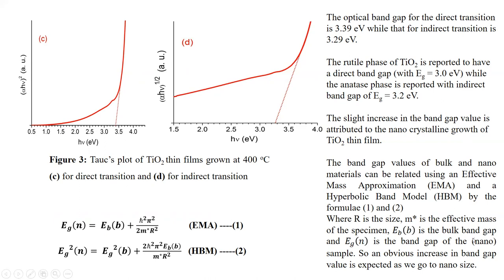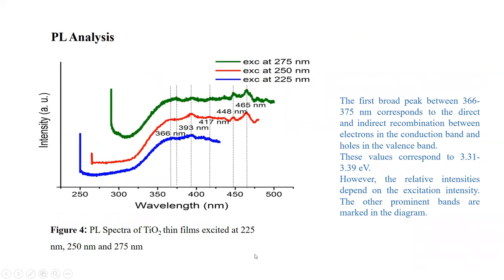Band gap values of bulk and nanomaterials can be related using the effective mass approximation and hyperbolic model by the formulae 1 and 2 given here. For photoluminescence analysis, the first broad peak between 366 to 367 nanometers corresponds to direct and indirect recombination between electrons in the conduction band and holes in the valence band, corresponding to 3.31 and 3.39 electron volts. The relative intensities depend on excitation intensity, and other prominent bands are marked in the figure.